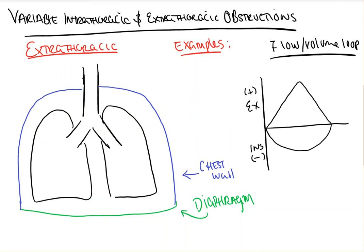So let's get started. We should know, before anything else, that they're called variable obstructions because they cause variable degrees of obstruction throughout the respiratory cycle, depending on their location, their severity, and which part of the respiratory cycle that we're in.